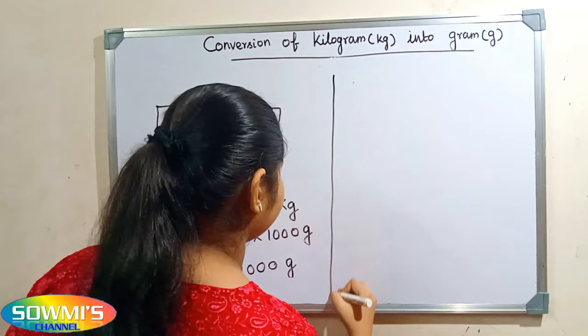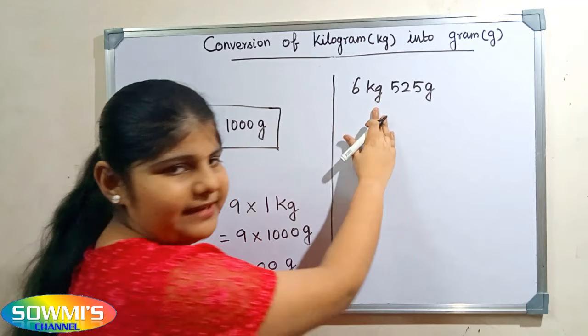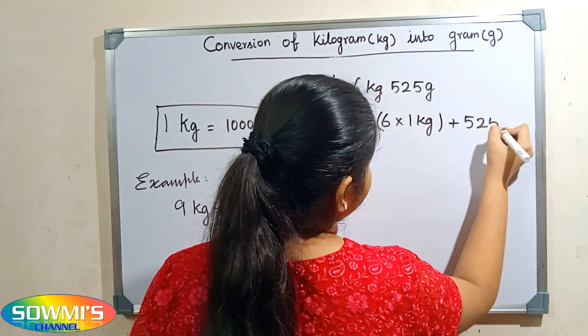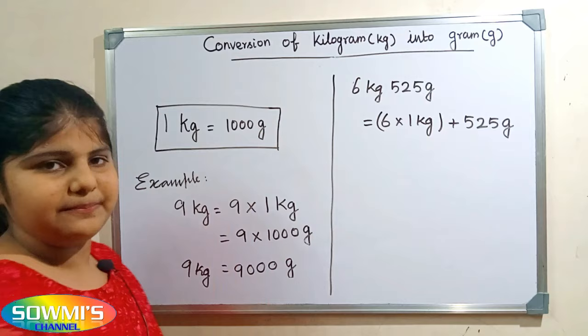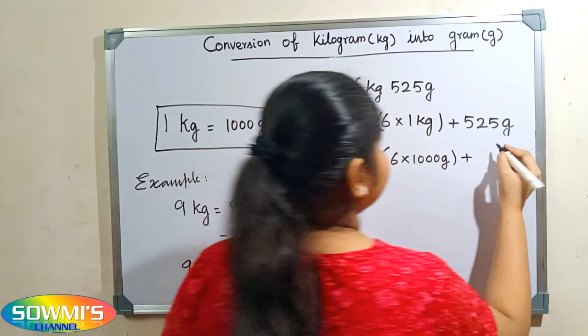Next we will take another example: six kilograms five hundred and twenty five grams. Six kilogram can be written as six multiplied by one kilogram, plus five hundred and twenty five grams. Now we substitute one thousand grams in the place of one kilogram: six multiplied by one thousand grams, plus five hundred and twenty five grams.